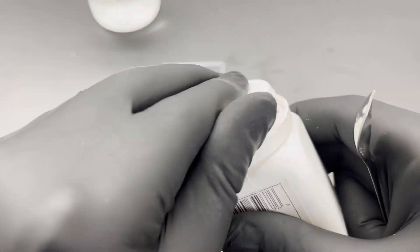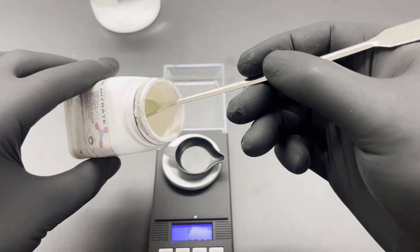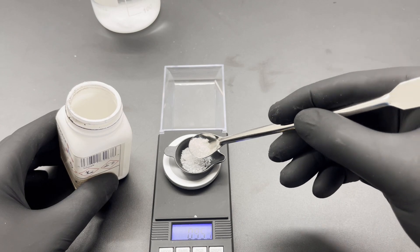Now 1.2 g of silver nitrate is weighed out and also dissolved in 100 ml of distilled water.